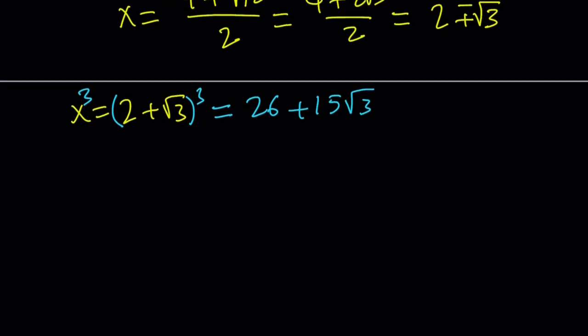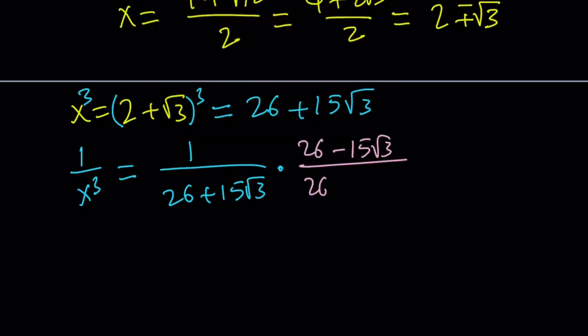So what about 1 over x cubed? Since we're going to add those, 1 over x cubed is just going to be the reciprocal of this. And then we can now rationalize the denominator. Let's go ahead and do it now. Now, multiply by 26 minus 15 root 3 and divide by that. So it's equivalent to multiplying by 1, which doesn't change the value. And the top becomes 26 minus 15 root 3. What about the bottom? The bottom is the most important part.